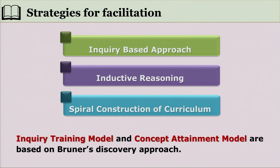The spiral construction of curriculum is another essential element for concept formation and attainment. In lower classes, certain concepts are introduced, and those concepts are built upon with more specificity and detail in higher classes. For example, in lower classes respiration is taught as breathing and photosynthesis as food preparation by plants; in higher classes the chemical reactions and process details are discussed. This spiral construction scaffolds children's thinking from easy to difficult, simple to complex, and concrete to abstract.